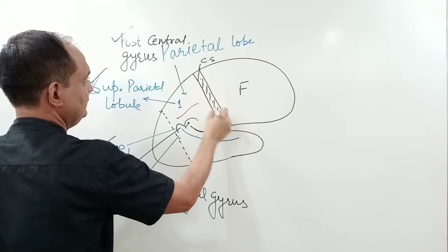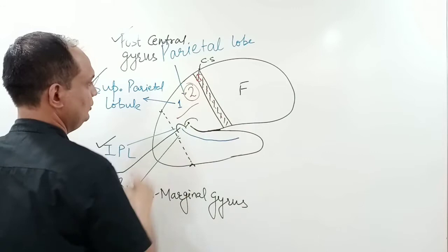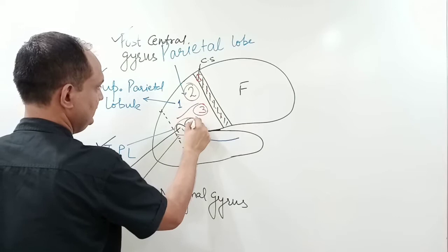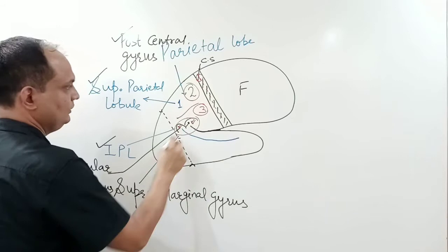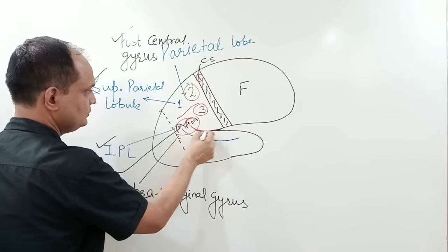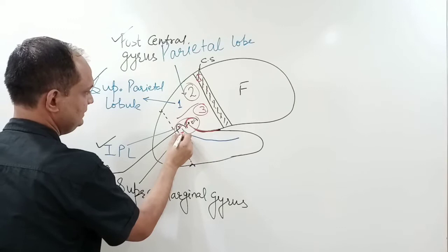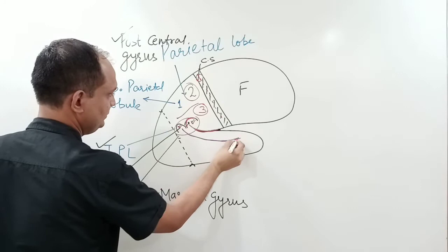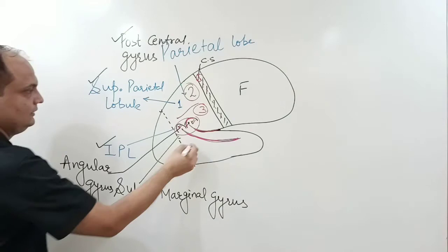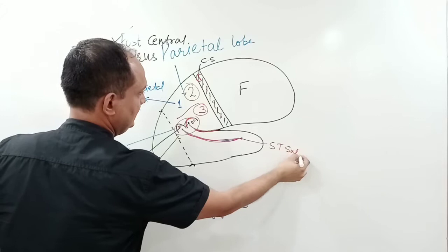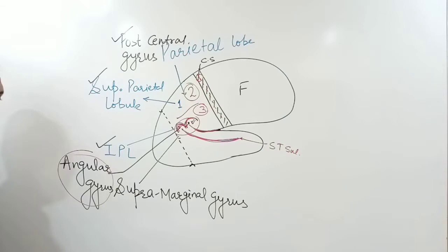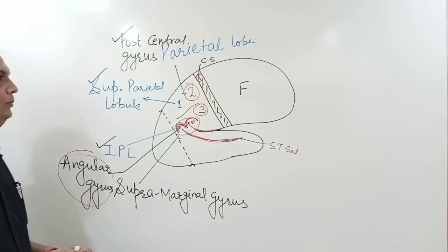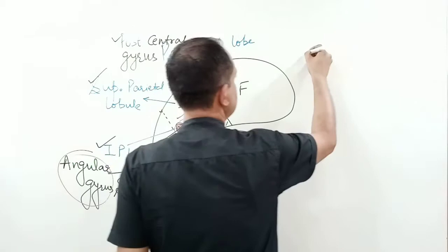To summarize the named areas of the parietal lobe: first we have the post central gyrus adjacent to the central sulcus, then the superior parietal lobule, then the inferior parietal lobule, and finally the supramarginal gyrus — which overlaps the posterior end of the lateral sulcus — and the angular gyrus — which occupies the area around the posterior part of the superior temporal sulcus.